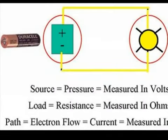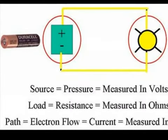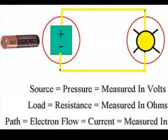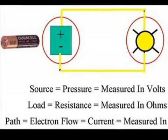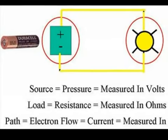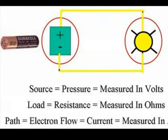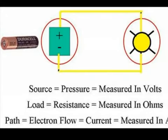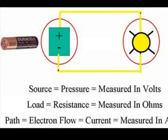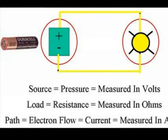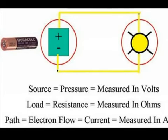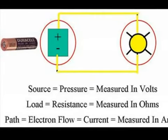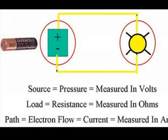Let's recap. All circuits need three things: source, load, and path. Our source is our energy source, measured in volts. Our load is any device doing work for us, and it exhibits some kind of resistance to the circuit — we can measure the amount of resistance by measuring the ohms.